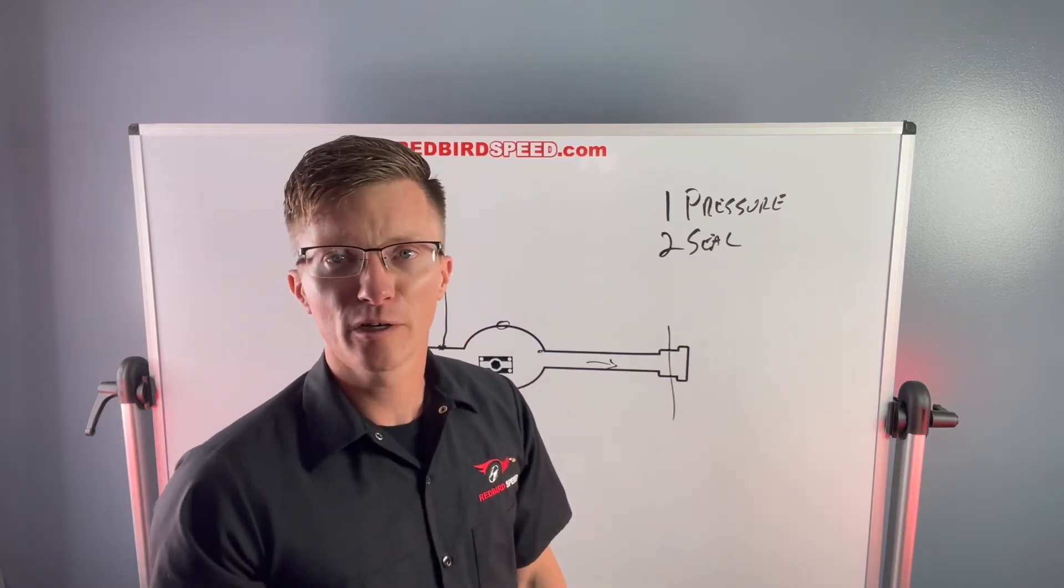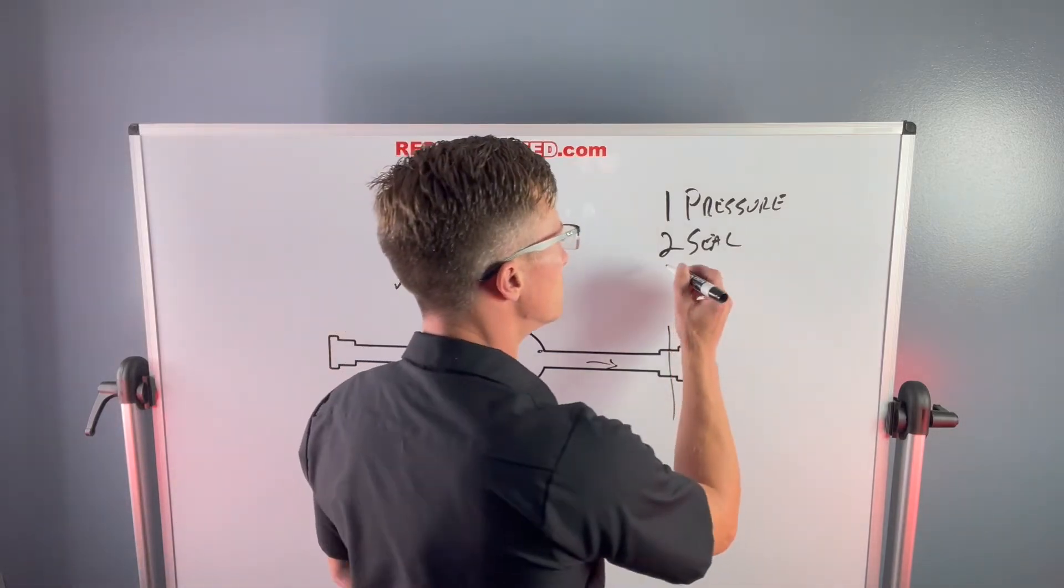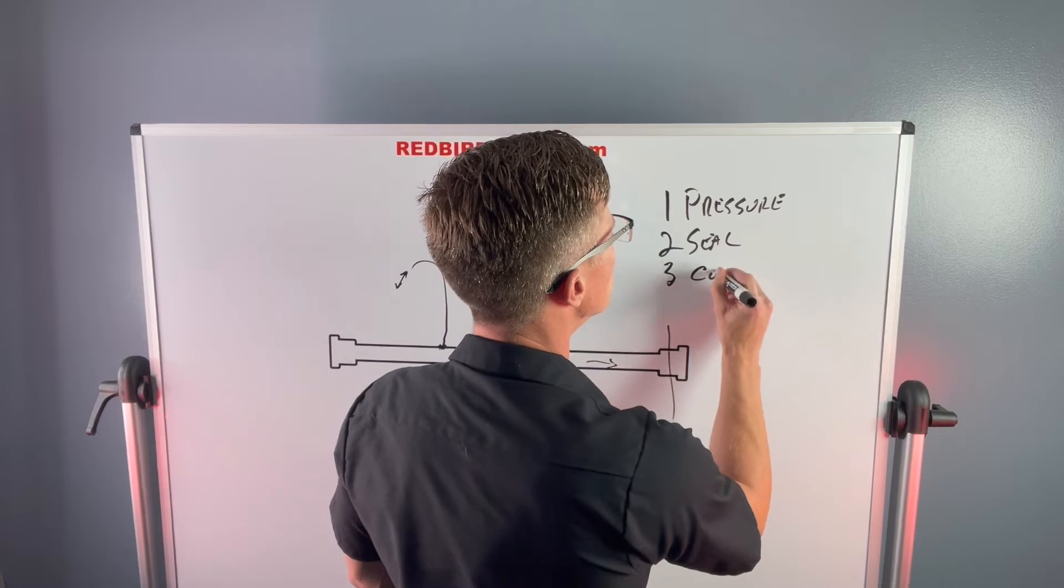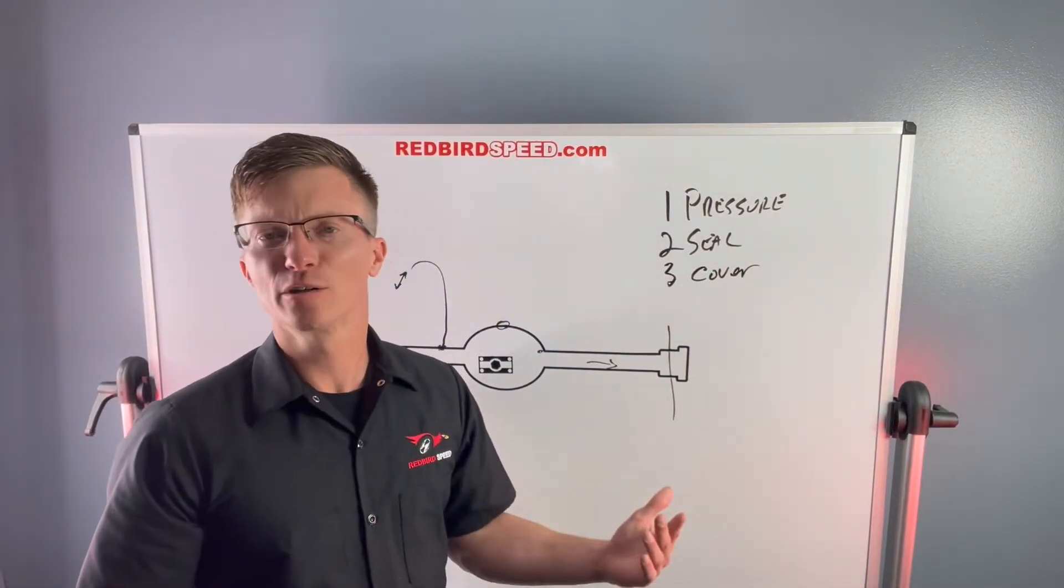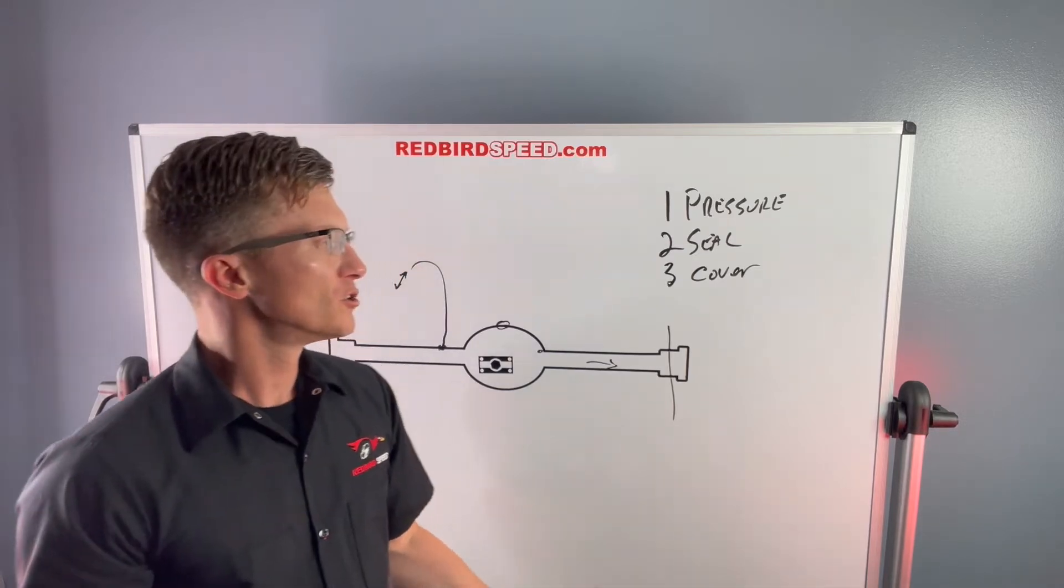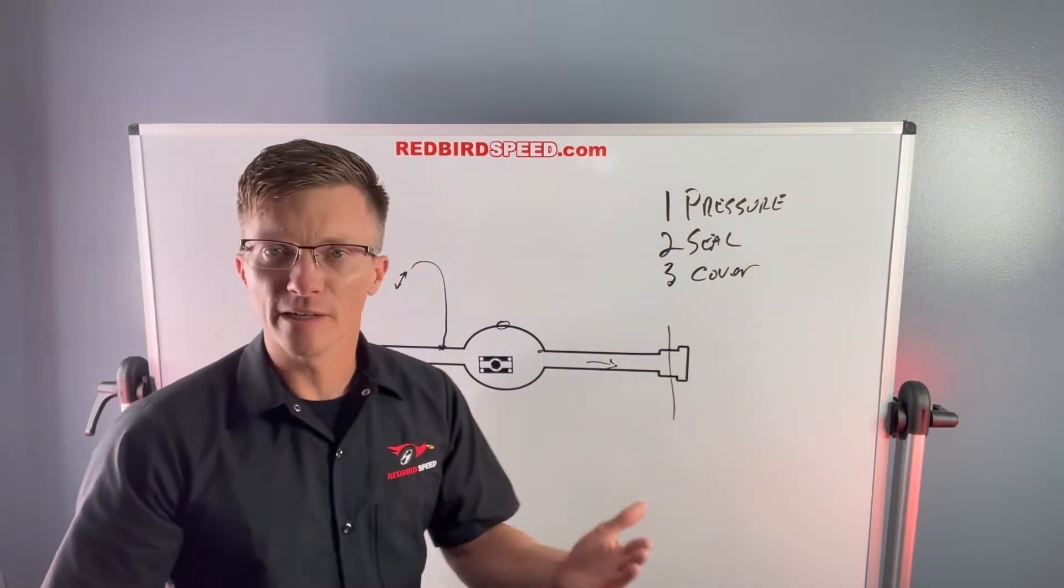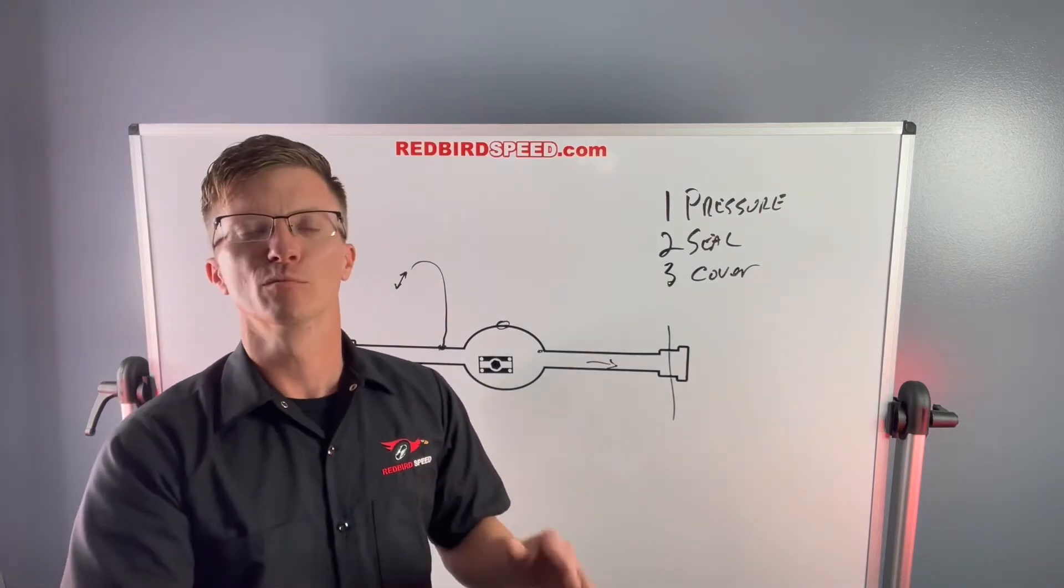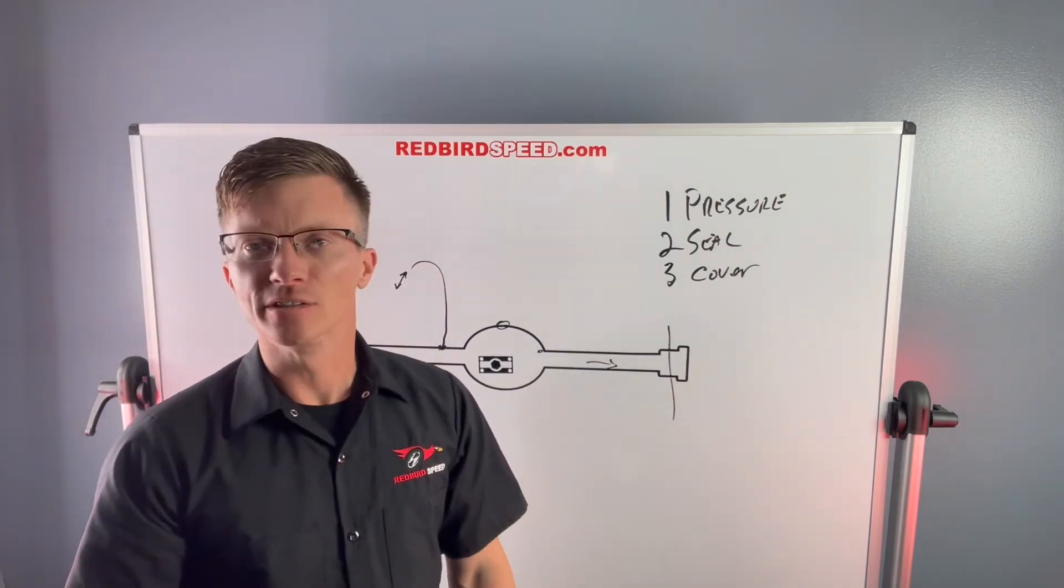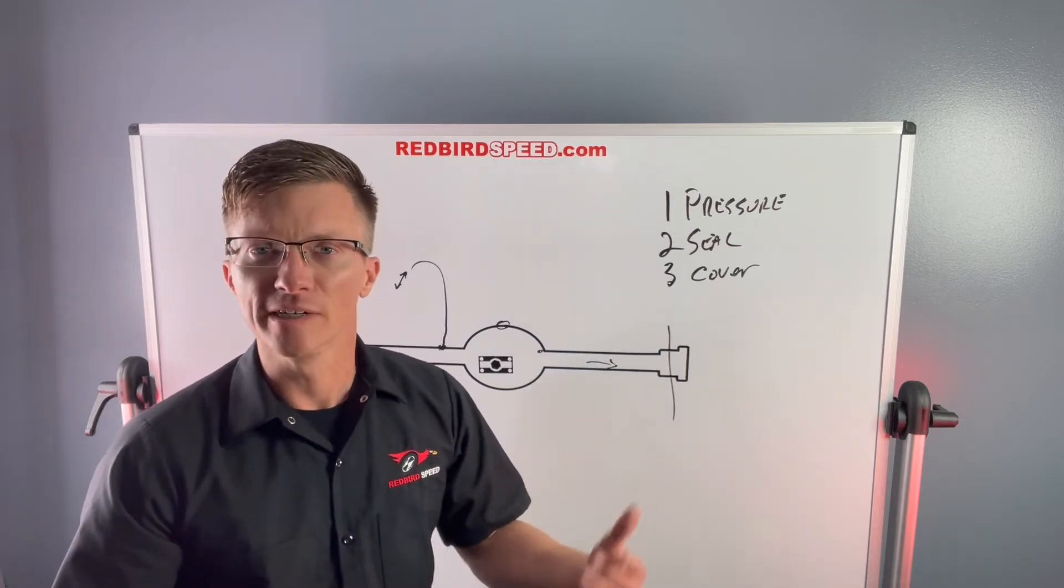All right, the third thing that could leak here, we got cover gasket. This cover gasket could also be like a third member gasket in a nine inch. So what I like to do with those, I like to get a little high temp RTV, go around all the holes real well, go around both sides of the gasket before putting it on. That gets a good seal, keeps things from leaking.